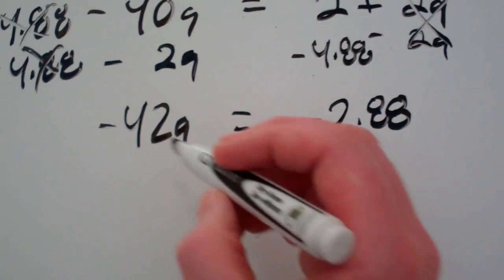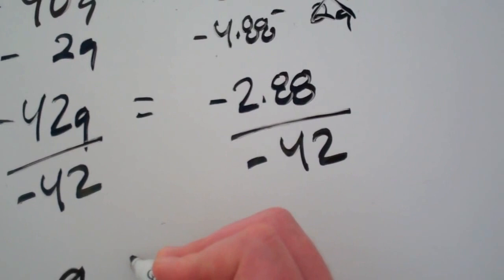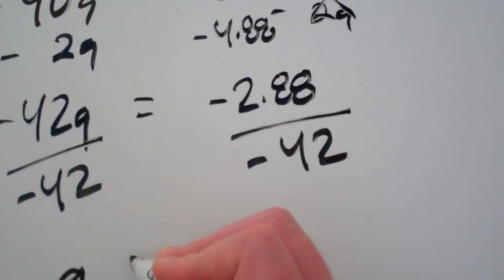Okay. So negative 42G equals negative 2.88. And then all we have to do is get G by itself. So minus 42 here and divide minus 42 here. Okay. So we do that. That isolates G. And you will find that G is equal to 6.86%. And that's all you have to do.